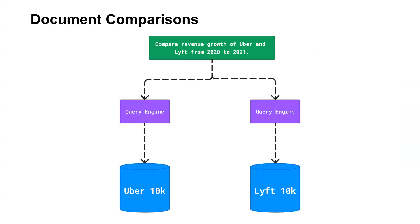The next concept handles complex queries such as 'Compare revenue growth of Uber and Lyft from 2021 to 2022,' where you have indexed both Uber and Lyft 10K filings. In this case, you get the revenue growth of Uber and Lyft separately, then concatenate both answers and generate a summarized response specific to the query. You can do this with the Sub Question Query Engine abstraction in LlamaIndex.